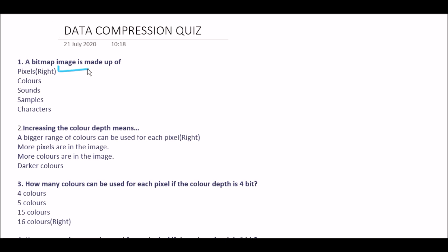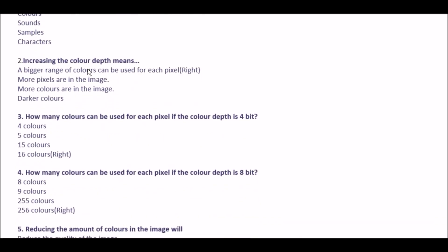Let's begin. The first question is: a bitmap image is made up of — option A pixels, option B colors, option C sounds, option D samples, option E characters. The right answer is pixels.